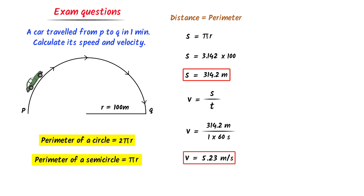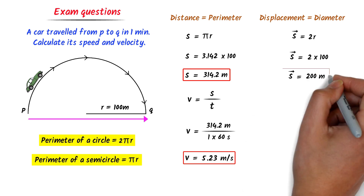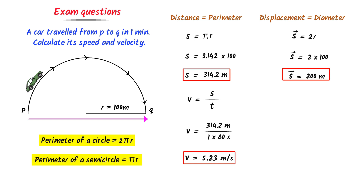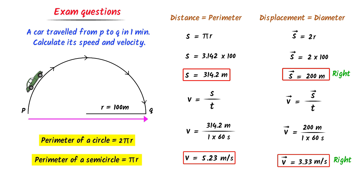Now for displacement: the car is displaced from P to Q in a straight line, which equals the diameter of the circle. Diameter = 2r = 2 × 100 = 200 meters. So displacement = 200 meters towards right or towards east. Velocity = displacement / time = 200 m / 60 s = 3.33 m/s towards east. By this method, we can easily calculate distance, displacement, speed, and velocity.